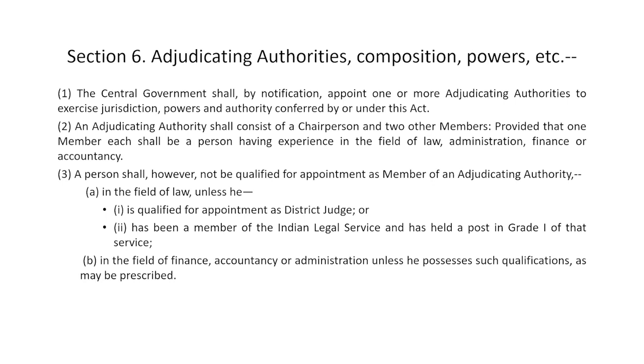Section 3 was the only offence under the PMLA Act of 2002. After discussing the offence, it is important to understand the authorities under the PMLA Act. In the last lecture, reference was made to two authorities: the investigating agency, which is the Enforcement Directorate, and the Adjudicating Authority constituted under Section 6 of the PMLA Act. The purpose of the Adjudicating Authority is to conduct civil proceedings for confirmation of the provisional attachment done by the Enforcement Directorate.